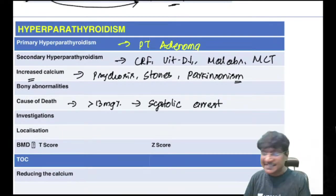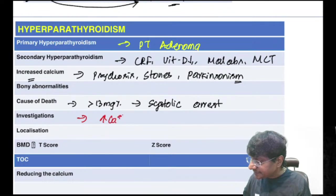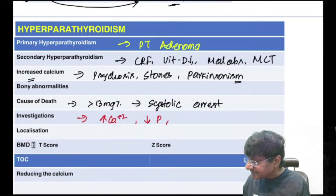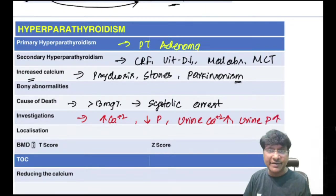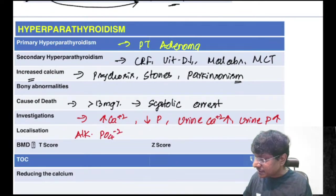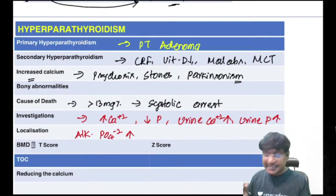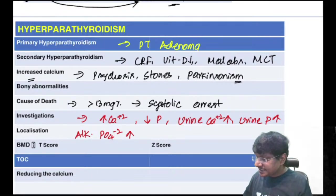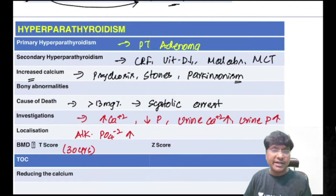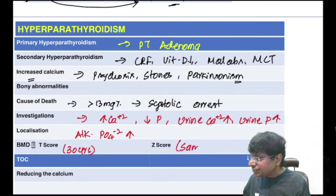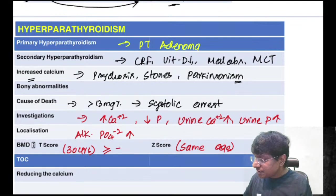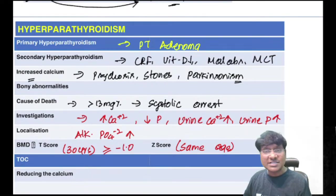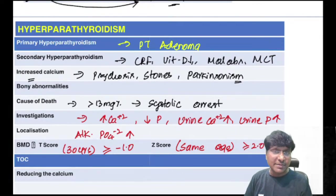Investigations in hyperparathyroidism: hypercalcemia, decreased phosphorus, elevated urine calcium, elevated urine phosphate, and elevated alkaline phosphatase (marker of bony turnover). For bone mineral density: T-score compared to 30-year-old same-gender individual; normal T-score is ≥ −1.0. Z-score compared to same-age individuals; normal Z-score is ≥ −2.0.